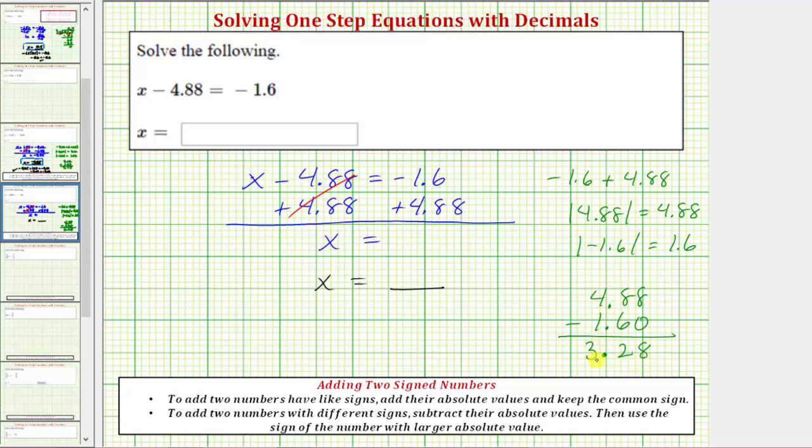So the difference is 3.28, but remember we need to use the sign of the number that has the larger absolute value. 4.88 is positive and it had the larger absolute value, and therefore the sum is positive 3.28, which means our solution is x equals 3.28.